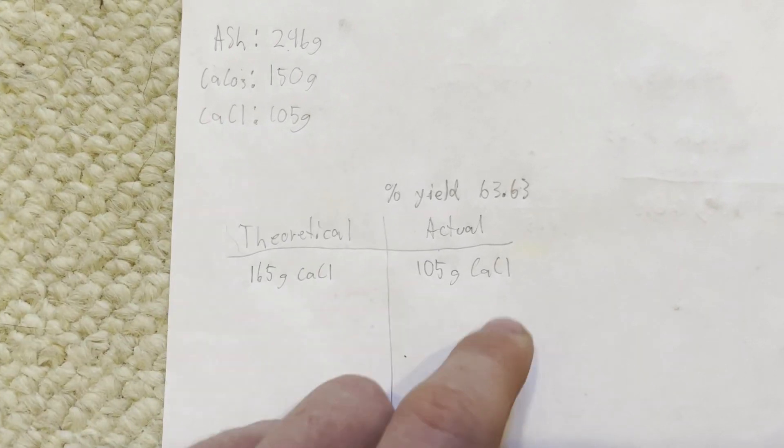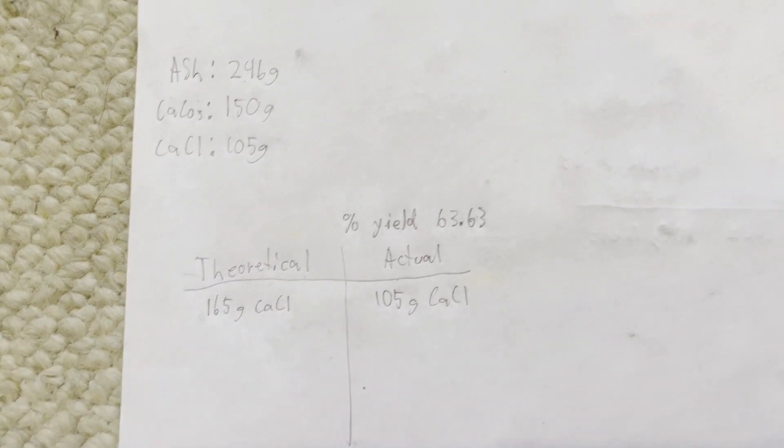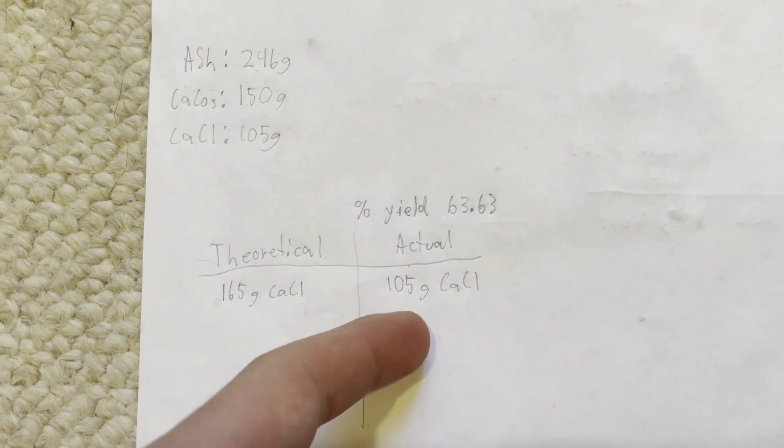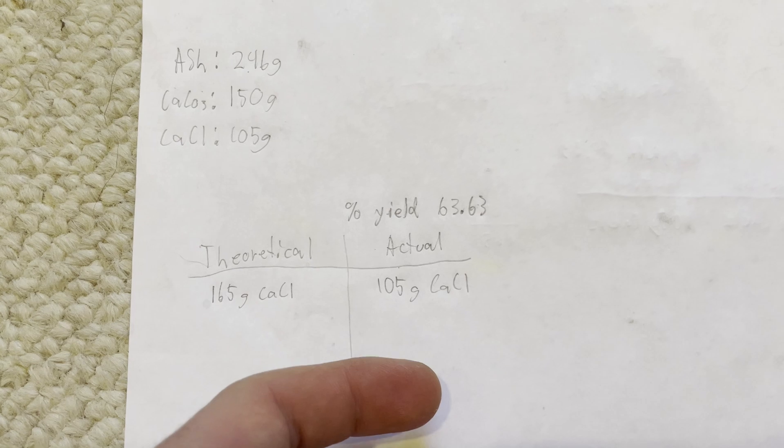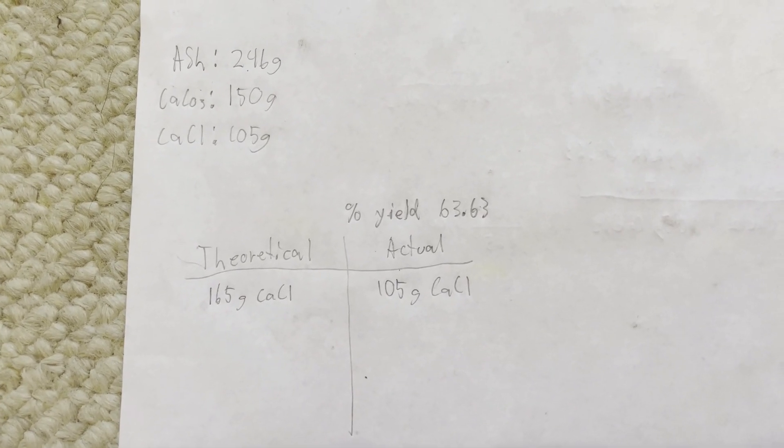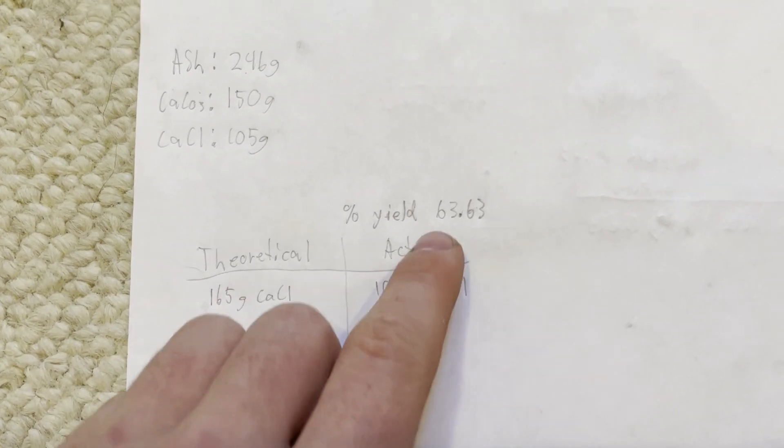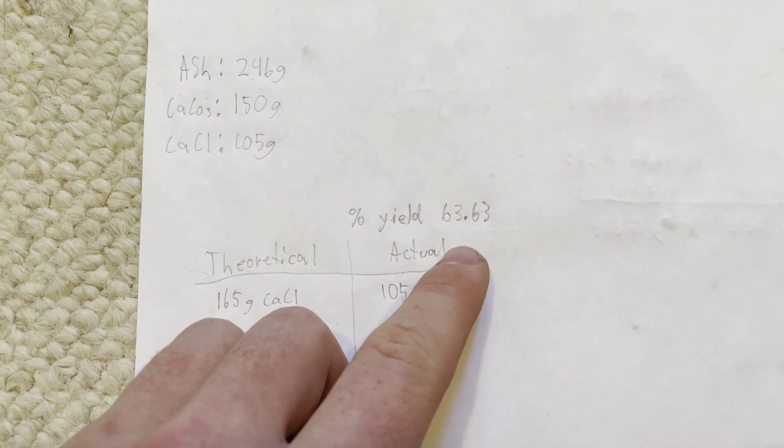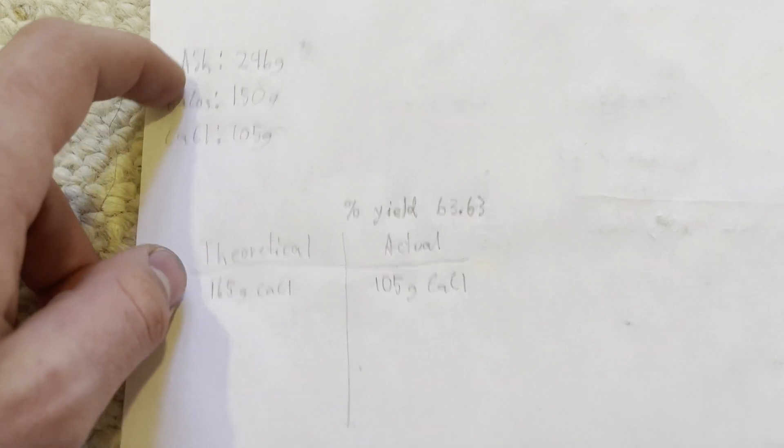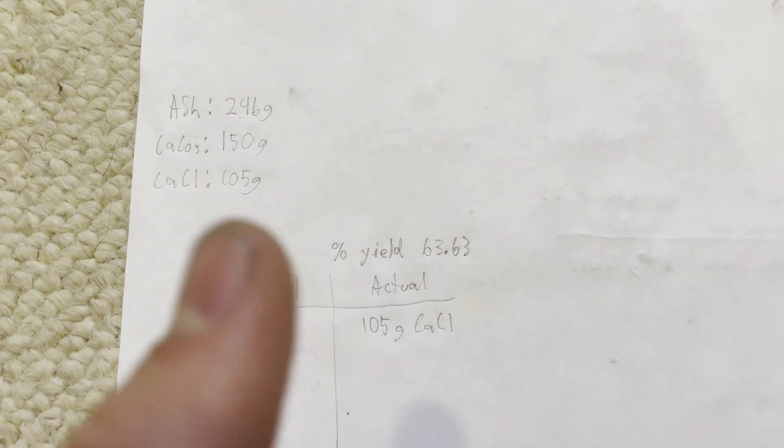But, I still ended up with around 105 grams of calcium chloride. It's not a great amount, but, it's enough for, pretty much, whatever I'm going to use it for, for a very long time, considering I don't really have that many uses that require a lot of calcium chloride. But, yeah, that's my yield. Around 63%. You could probably boost it up to 80% if you're really careful with everything and did a better job of straining out ash. So, let's go look at our product one more time.